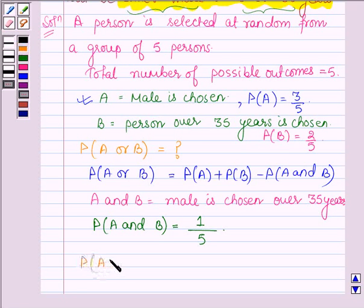And thus probability of A or B is equal to probability of A, that is, 3 upon 5, plus probability of B, which is 2 upon 5, minus probability of A and B, which is 1 by 5.